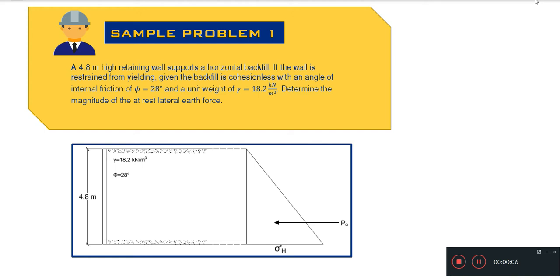we will have our sample problem number one for the lateral earth pressure in the at rest condition. A 4.8 meter high retaining wall supports a horizontal backfill. If the wall is restrained from yielding,